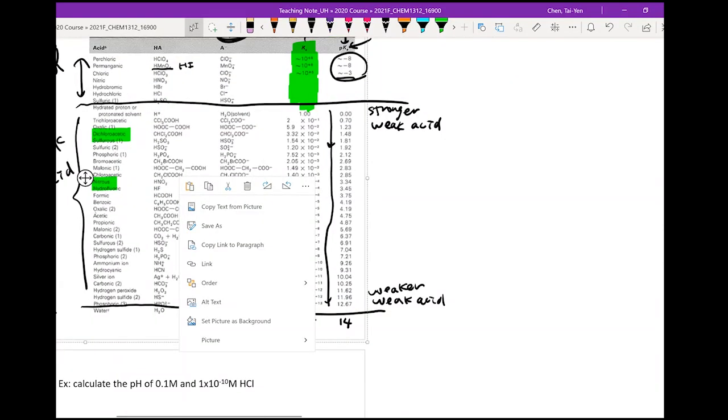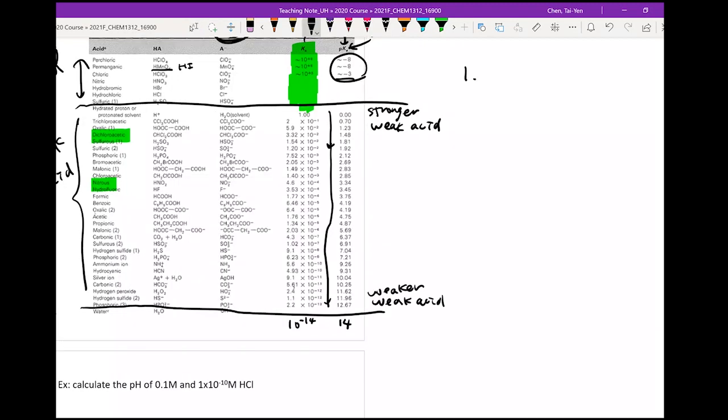To summarize this slide, two things. First, you need to memorize this table - well, you don't need to memorize it, but you need to know how to read the table. Second, you need to know how to use Ka to judge relative acid strength. If I give you several substances with their Ka values, you need to arrange them by relative acid strength. Find the one with the biggest Ka - that's the strongest acid. The smallest Ka is the weakest acid.